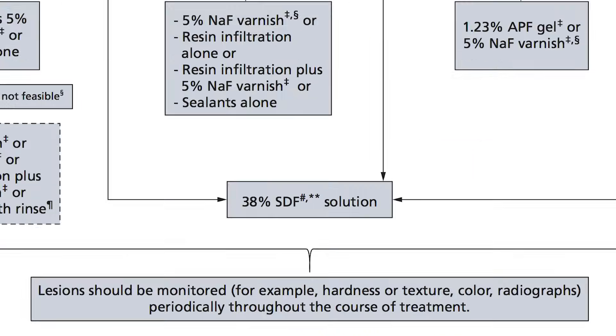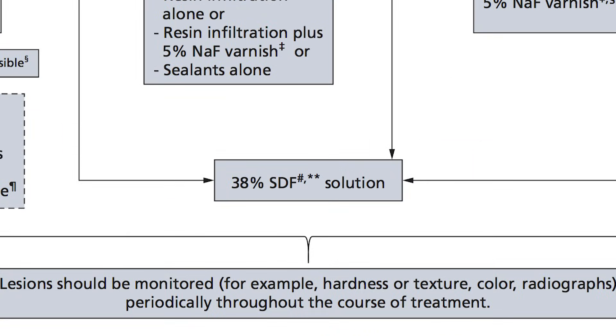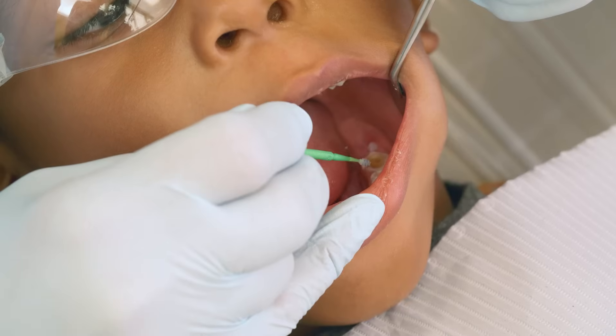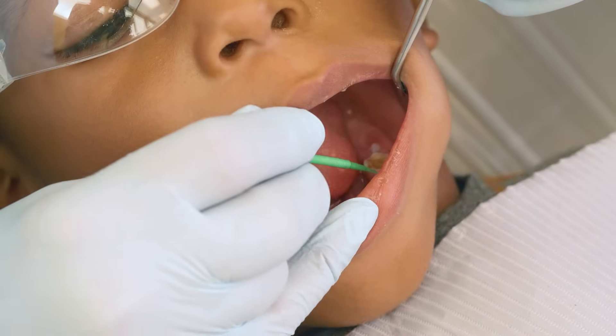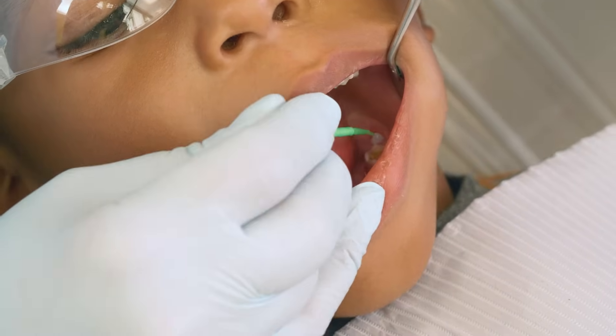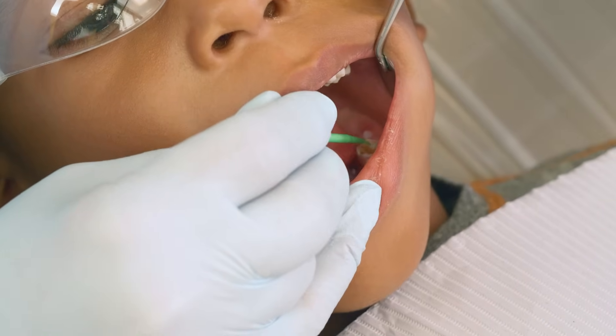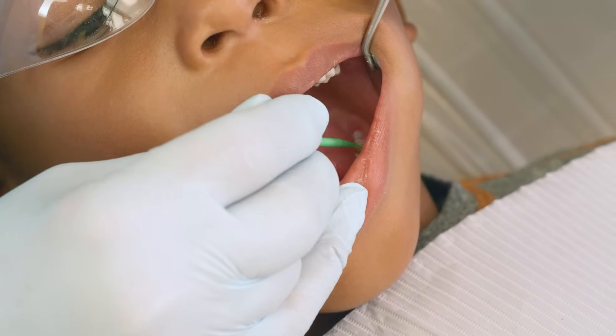The panel also suggests the use of 38% SDF to arrest advanced cavitated carious lesions on any coronal surface of permanent teeth.